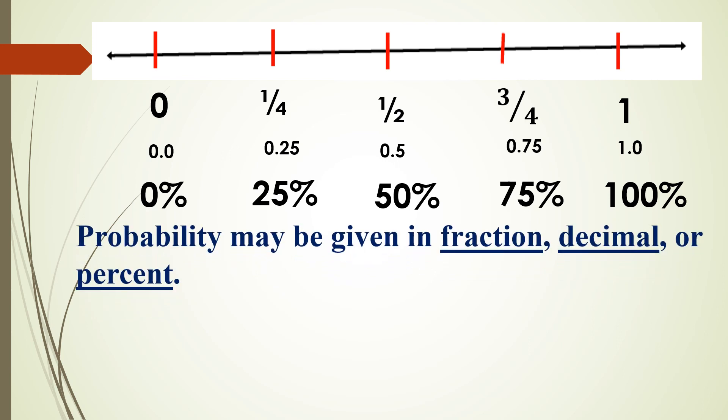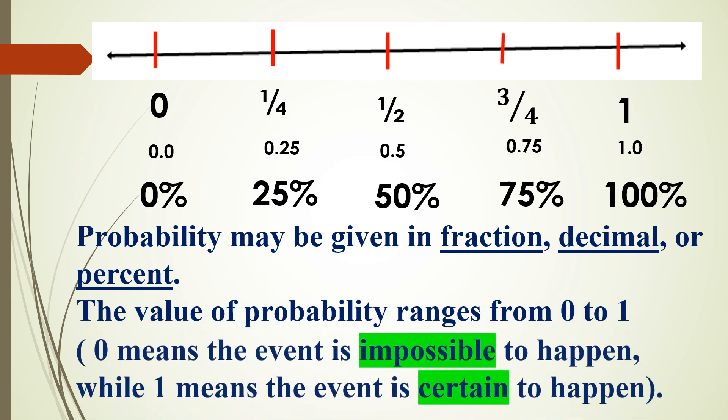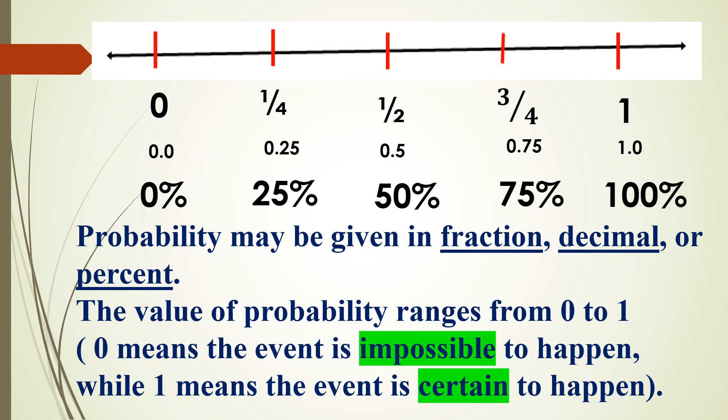Probability may be given in fraction, decimal, or percent. The value of probability ranges from 0 to 1. 0 means the event is impossible to happen, while 1 means the event is certain to happen.